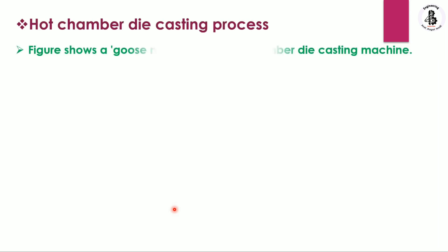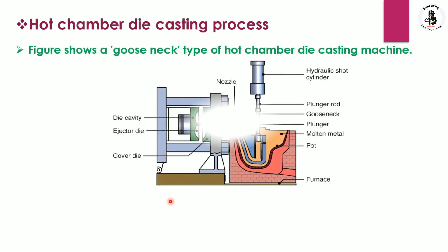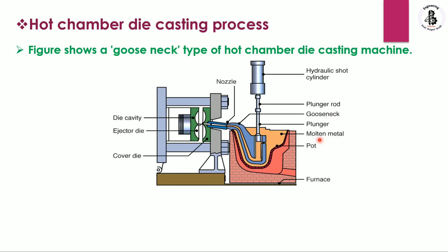You can see the figure of the hot chamber die casting process. Starting with the components used in this process — first is the furnace, which is used to increase the temperature of the metal, converting solid metal into liquid form. The molten metal is collected into a pot, and on the upper part of the pot there is the plunger.